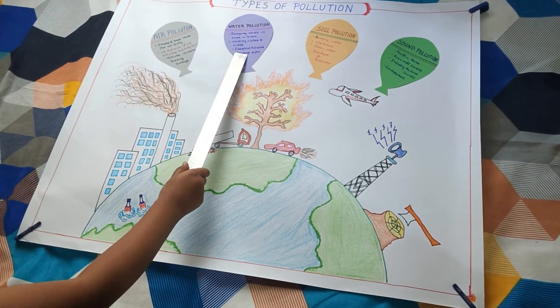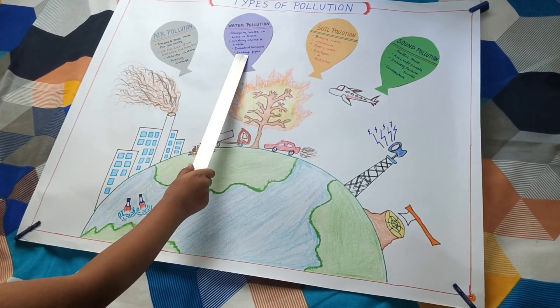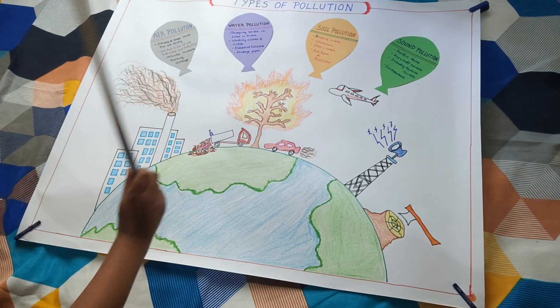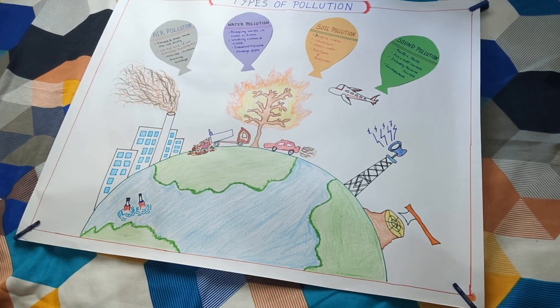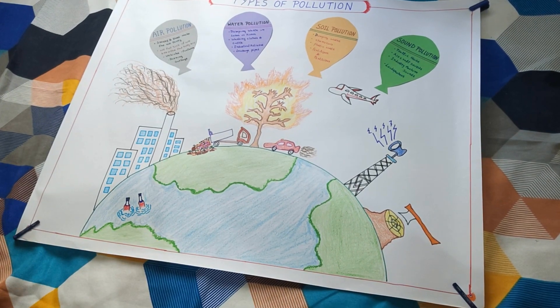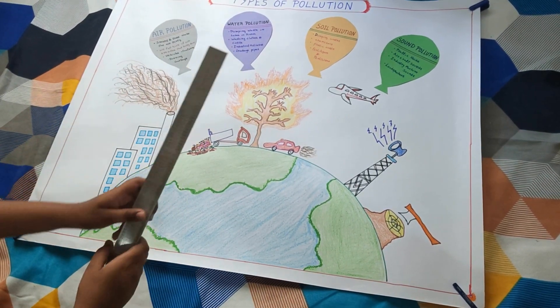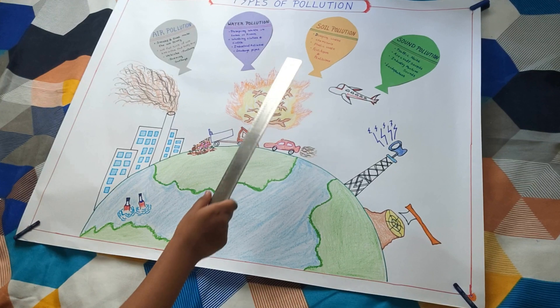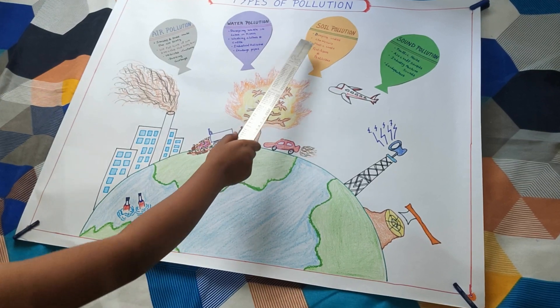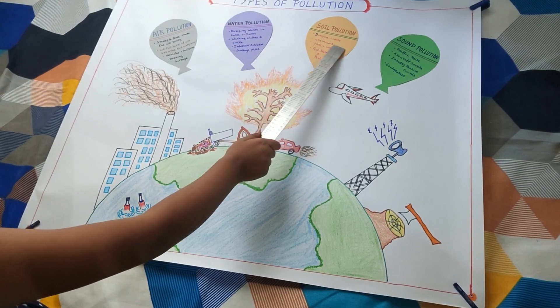Now let's go to water pollution. Dumping waste in lakes or rivers, washing clothes and cattle, and leaking pipes are the main reasons for water pollution.